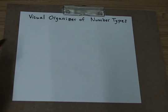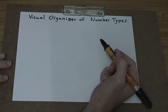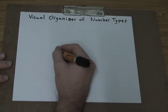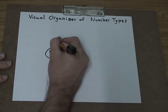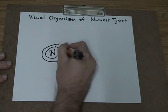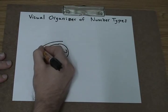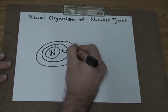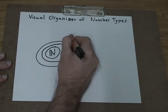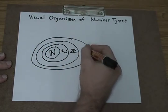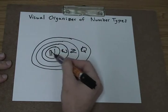Visual organizers are a good way to help us organize and make sense of the different types of numbers. Let's use a bubble map or circle map to organize our number types. The smallest number type are the natural numbers, the next biggest are the whole numbers, and natural numbers are included inside the whole numbers set. The next bigger set is the integers, which contains whole numbers and natural numbers.